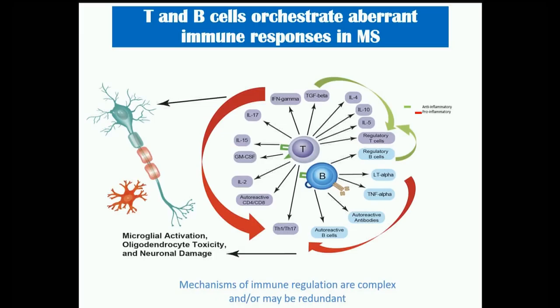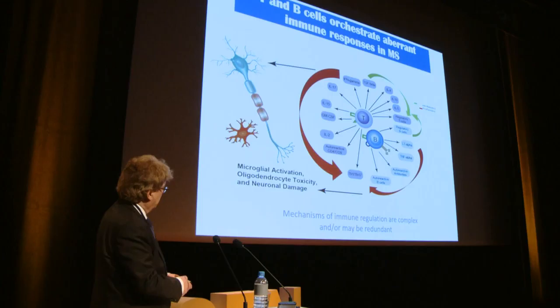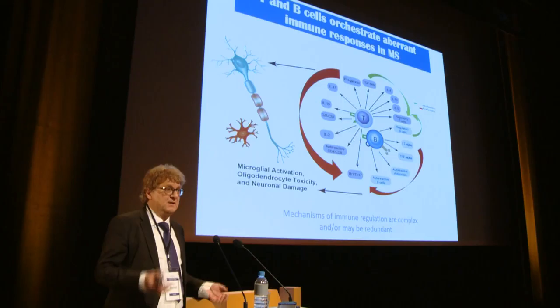Experimental work has delineated a very complex network of immune reactions orchestrated by T and B cells, particularly regarding the inflammatory stage of MS. These pathways include both pro-inflammatory T cells with their cytokine signatures and regulatory T cells, representing the organism's continued attempt to balance potentially autoaggressive responses through counter-regulatory mechanisms, both cell-based and humoral.